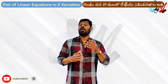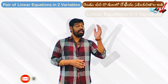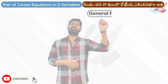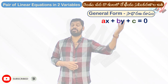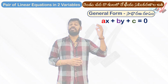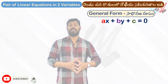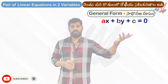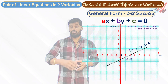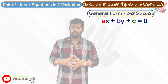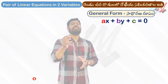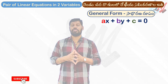We have discussed this in the 9th class, where we had a chapter on linear equations in two variables. We covered the general form ax plus by plus c equal to 0, and found multiple solutions. We have already done this in the 9th class, and now we have a little more advanced content in the 10th class.